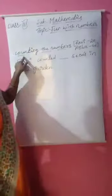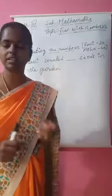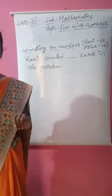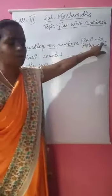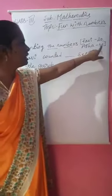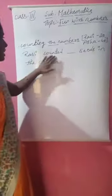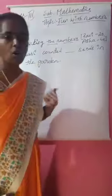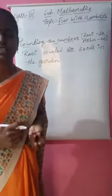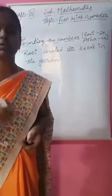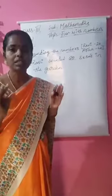The first topic is counting the numbers. We will be playing a game from the textbook: how many seeds are collected in the garden. For example, Ravi collected 20 seeds. Rasha collected 40 seeds. So this is the example given for you. Ravi collected seeds in the garden — how many? We write 20. Asha — how many seeds collected? It is 40. Similarly, it will be counting one by one. This is called counting the numbers.